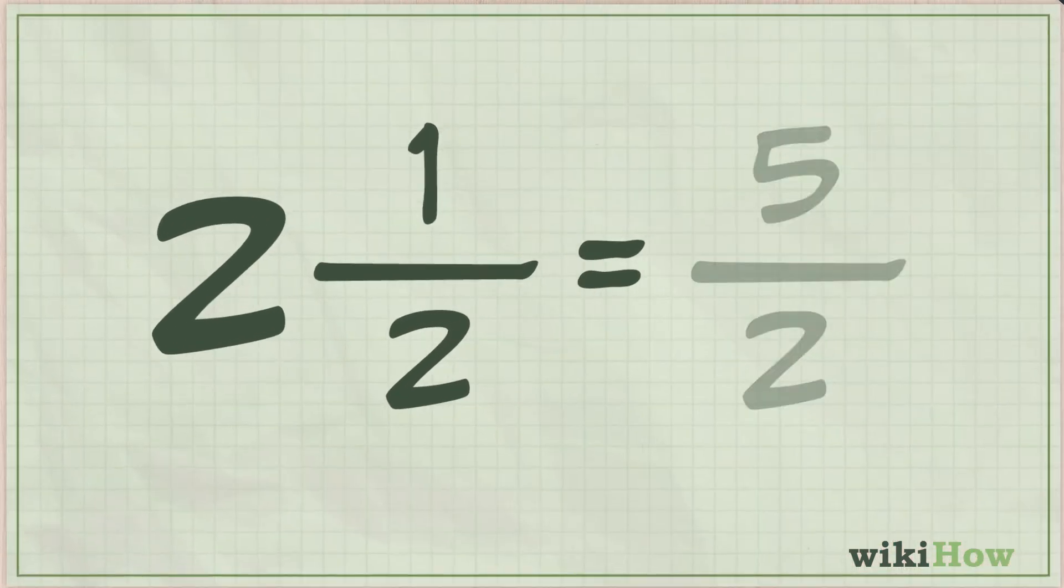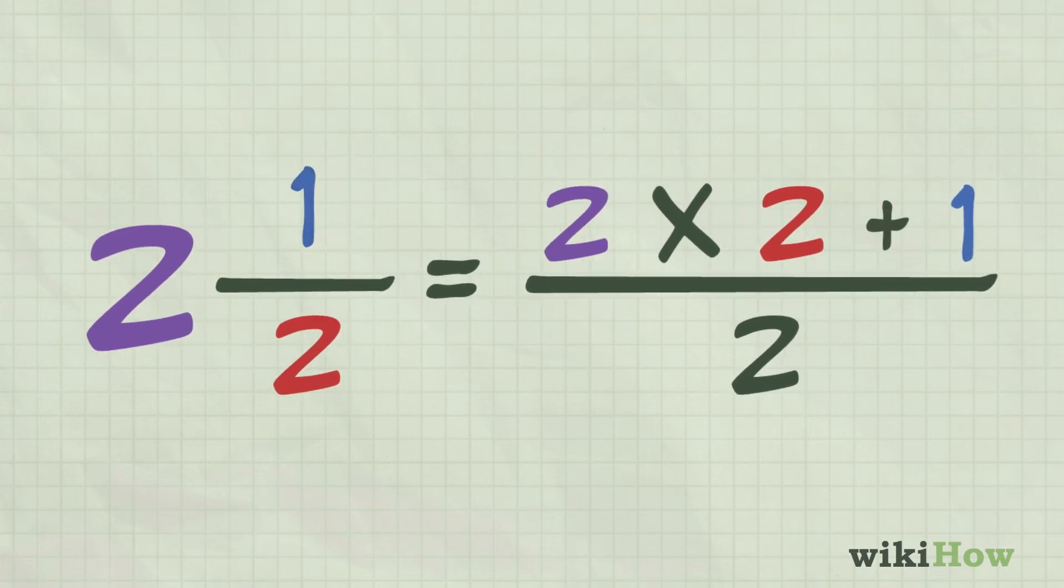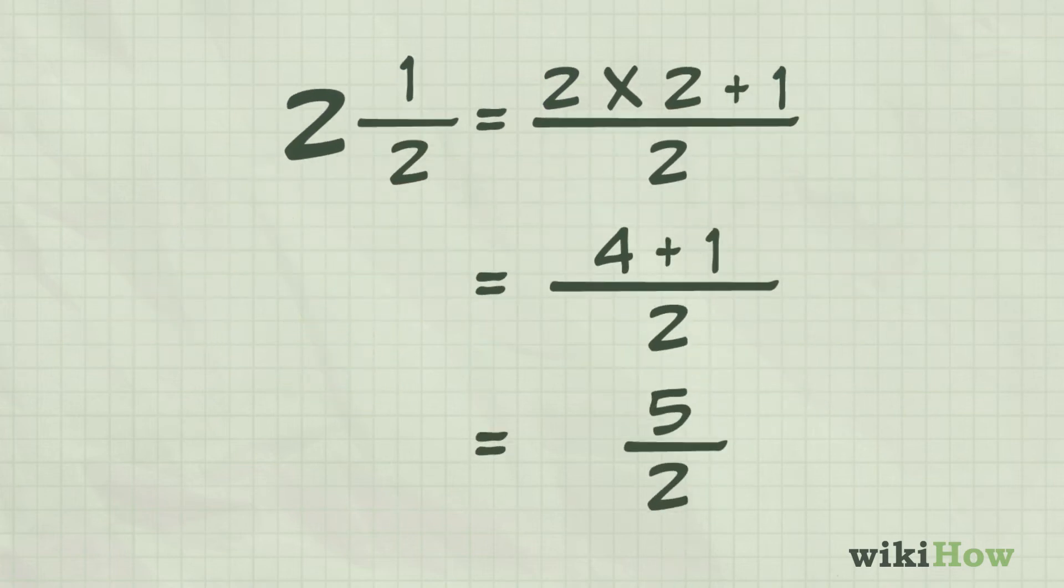To do this, multiply the whole number by the denominator of the fraction, then add the product to the numerator. The resulting number will become the numerator in your improper fraction.